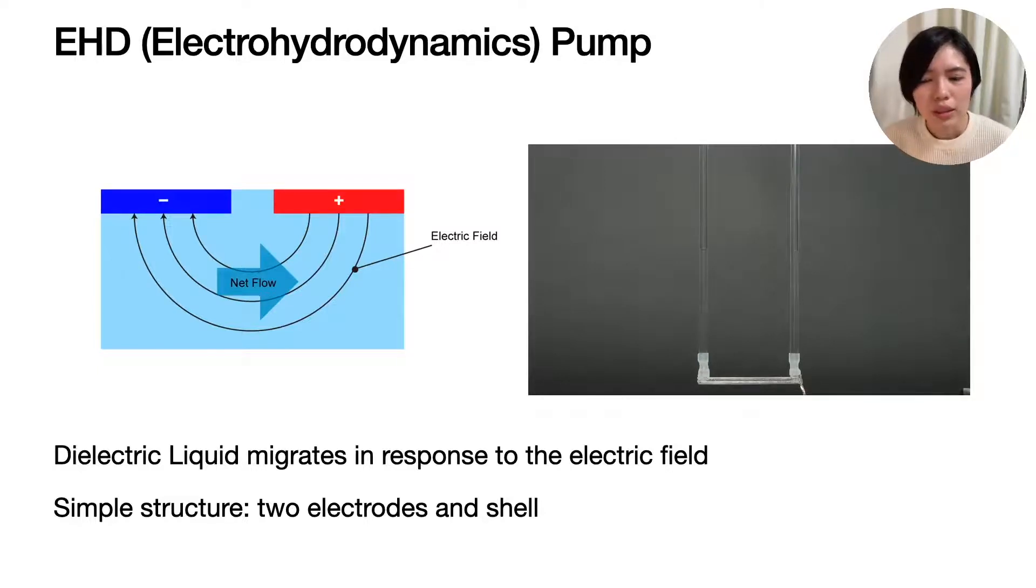The EHD pump has a simple structure consisting of positive and negative electrodes and an outer shell. By simply placing the electrodes in the flow path, the flow path and the pump can be integrated.